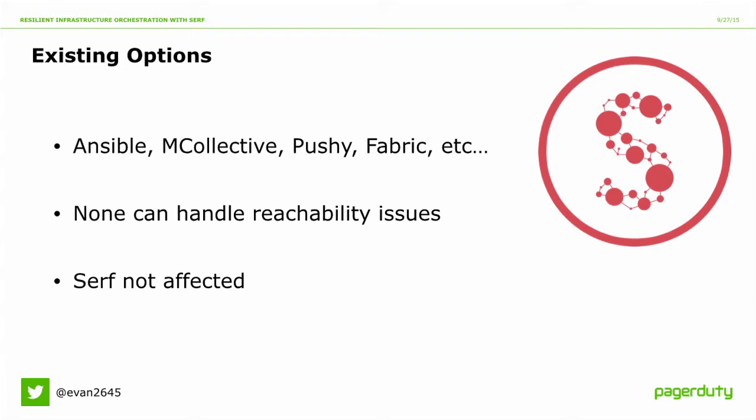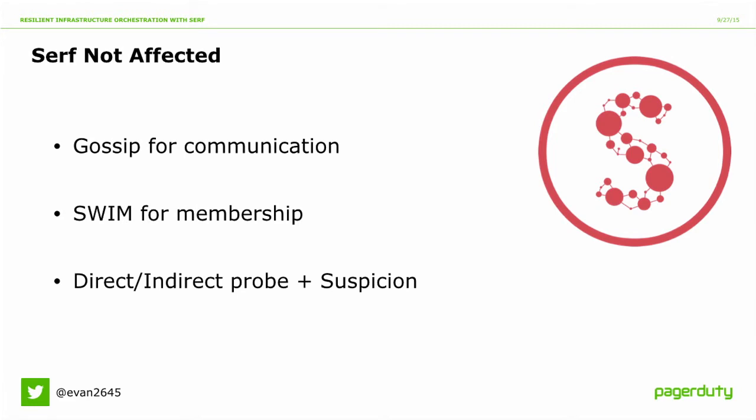Under SERF, gossip is used for message passing only — getting a message from one node to another traverses the gossip network, which means we can route around weird failures. But there are also membership issues — how do you know that a neighbor is alive or dead if you can't directly reach it? SERF has implemented a paper called SWIM for that. SWIM is published by Cornell, and the SERF implementation is called MemberList. It uses SERF for member state information and also failure detection.